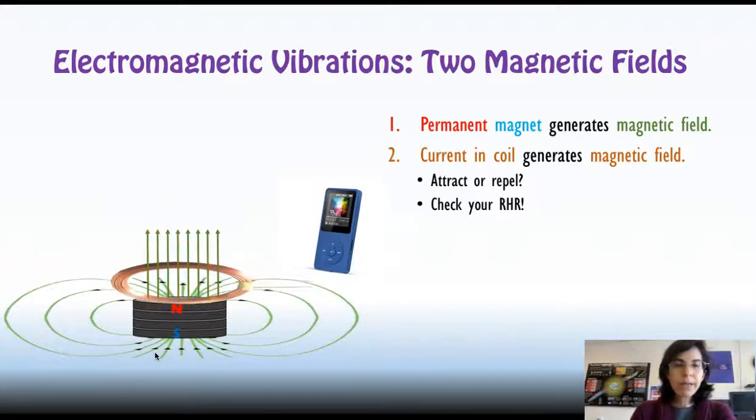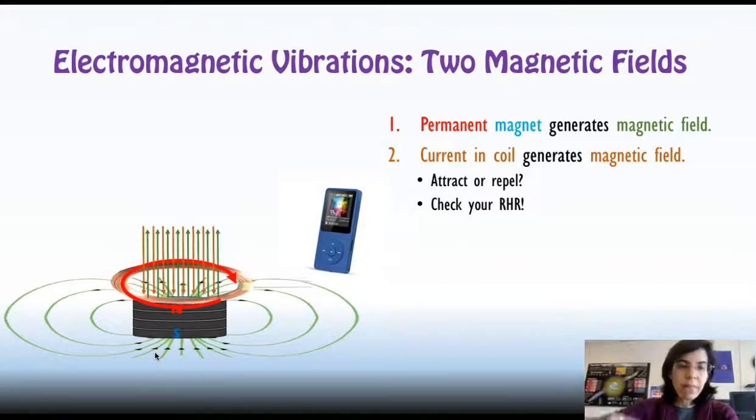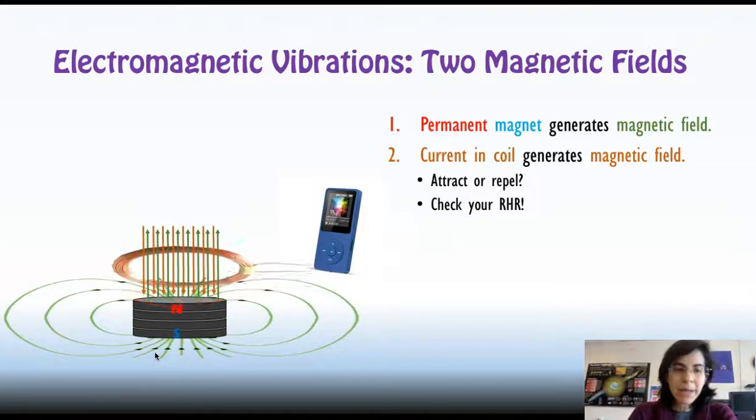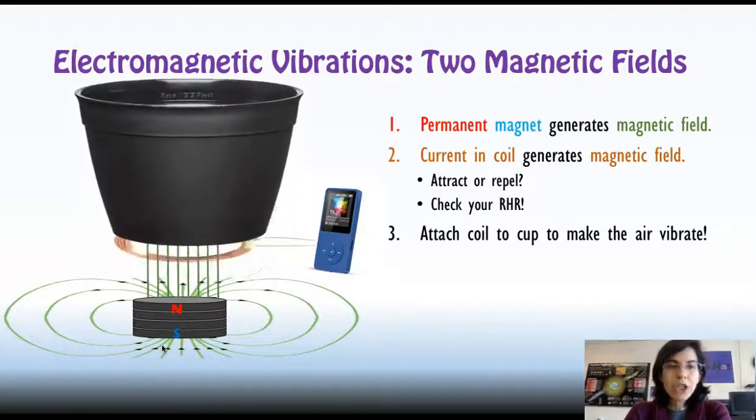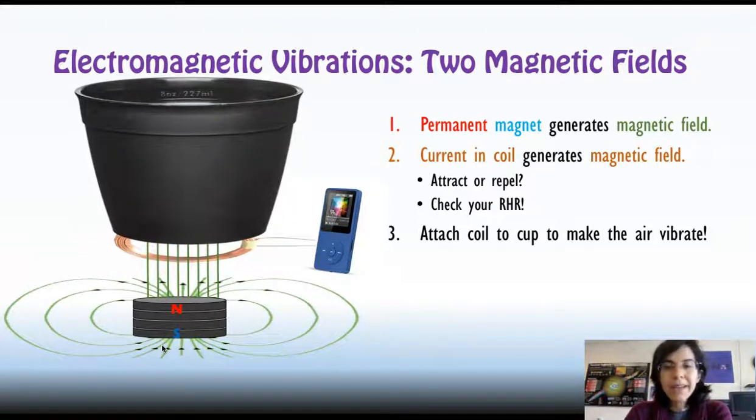Now, the music player switches the direction of the current and has it go the other way. Current goes clockwise. Magnetic field points down. Those are misaligned magnetic fields. They repel and the coil moves up. Change this every time the note changes and you will have things vibrating at different frequencies. How much air pressure does a circle of copper wire make? Well, not so much.